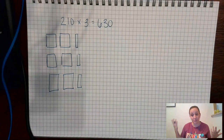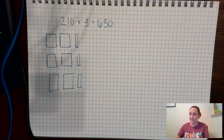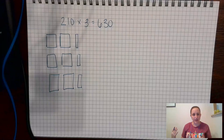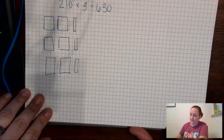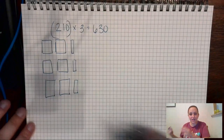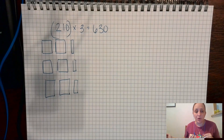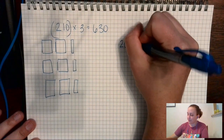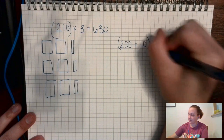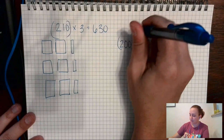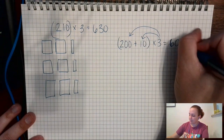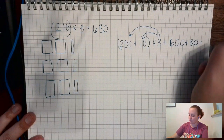Now this was a pretty easy example — some of them are going to be really big numbers where you'd have to draw a lot. But this is a multiplication array, where we have equal things in every row. Another way we can look at this is to take 210 and break it up into expanded form: 200 plus 10. Remember times three — this is the distributive property — we do three times 200 and three times 10. Three times 200 is 600, plus three times 10 is 30, and that equals 630.